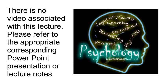Another researcher, Gardner, had a completely different way of conceptualizing intelligence. Gardner believed we have many distinct intelligences — there is not one general ability that underlies them all. He theorized eight distinct forms of intelligence, and everybody is either high or low on each particular area.